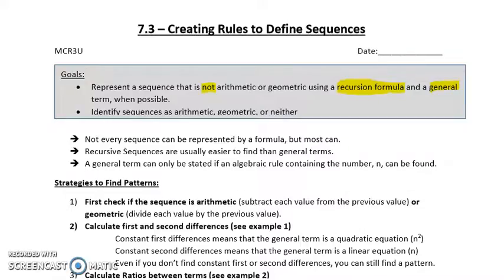A general term can only be stated if an algebraic rule containing the number n can be found. So, strategies to find patterns. The first strategy is check if the sequence is arithmetic. We subtract each value from the previous value to check that. Or, if it's geometric, we divide each value by the previous value to determine that.